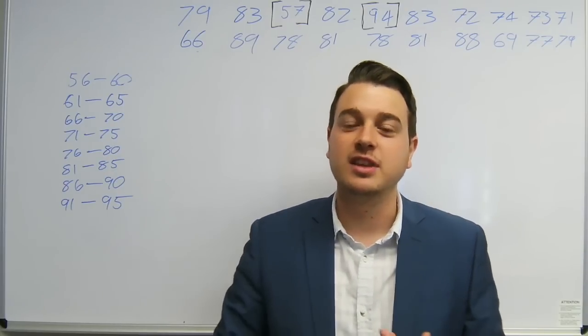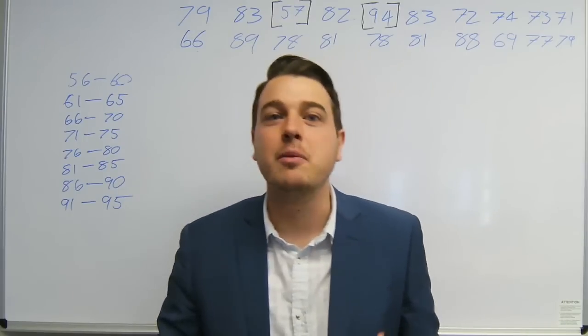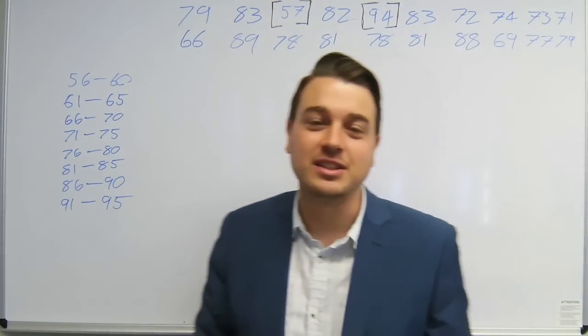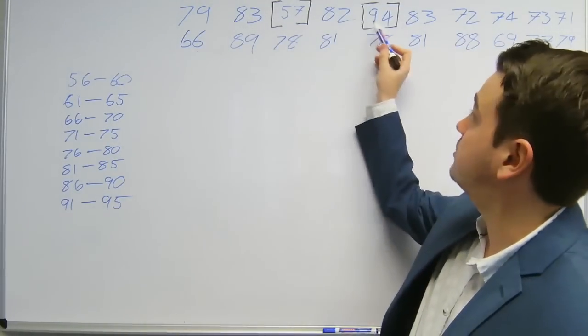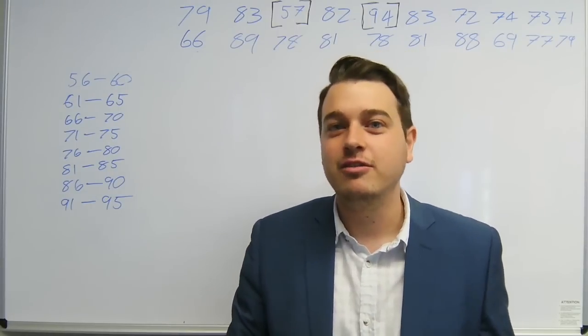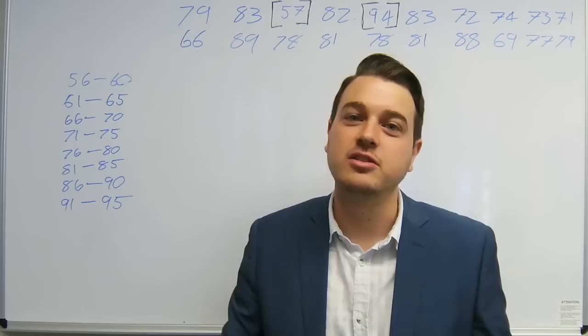To be able to draw the histogram we have to consider the bin size and the number of bins. We can see that the minimum amount of marks was 57 and the maximum was 94. If we take a bin size of about 5, that should be large enough to give us a maximum of 10 bins.